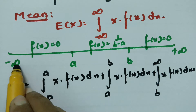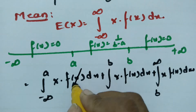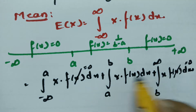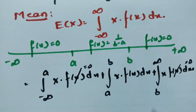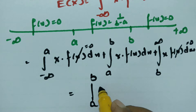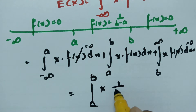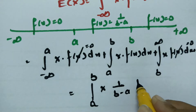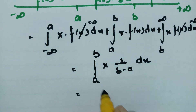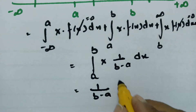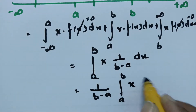Here, between minus infinity to a, f(x) = 0, and between b to infinity, f(x) = 0. In between a to b the f(x) value is 1/(b − a). So the expression reduces to the integral from a to b of x times 1/(b − a) dx.